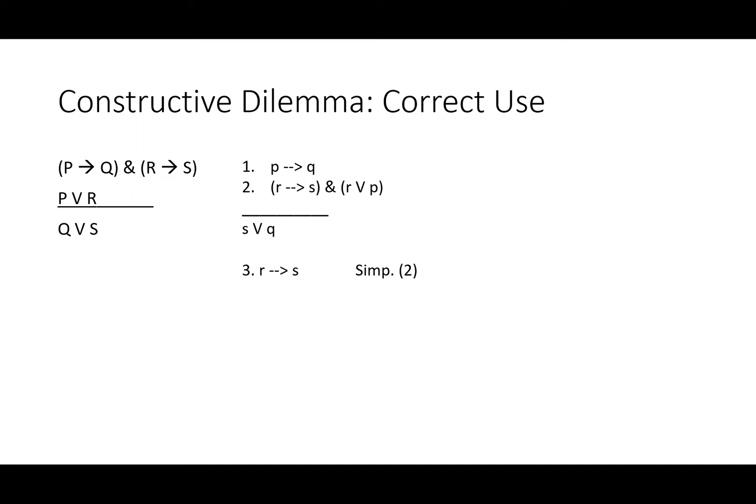Well, let's simplify out if R then S, and let's simplify out either R or P. Now we'll go ahead and conjoin our two conditionals and get if R then S and if P then Q. Now we can get either S or Q, our conclusion, by a constructive dilemma.